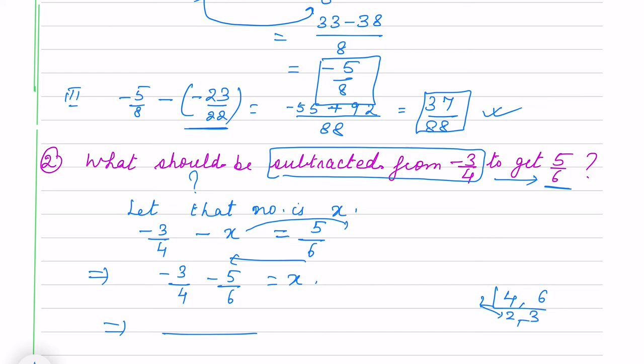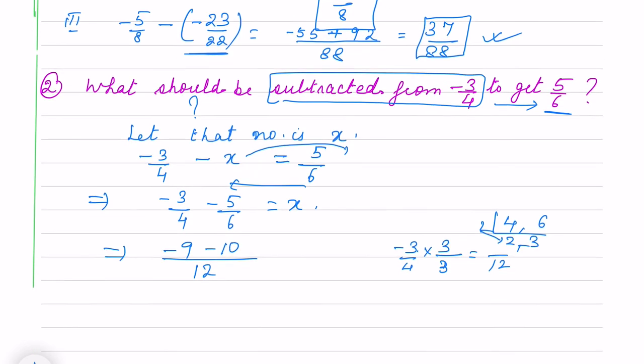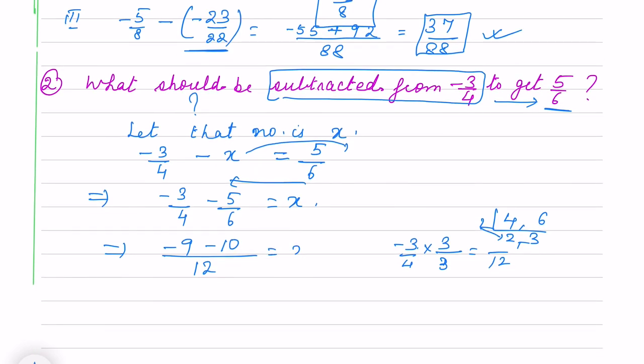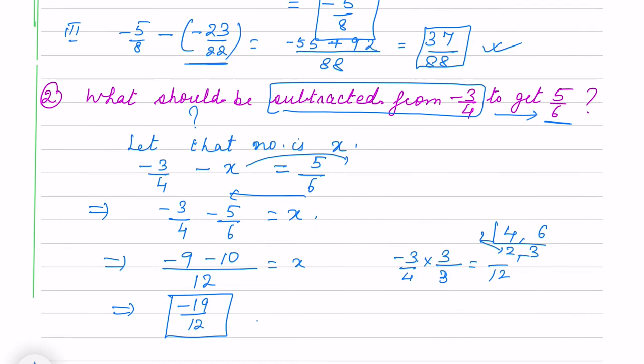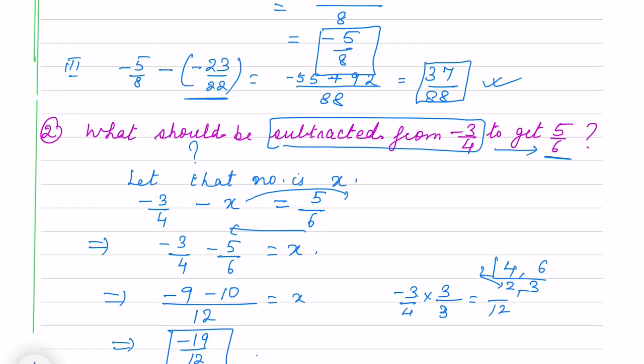So it is 2 times 2 is 4 and 12. So 12 will be LCM. So 4. I am doing what? 4 times 3 is 12, so minus 3 times 3 is minus 9. Here minus 10, 6 times 2, so minus 5 times 2. Will be there. That means what? Minus 19 by 12 will be your answer. So this way we use to subtract the numbers.